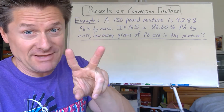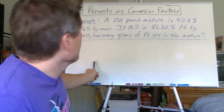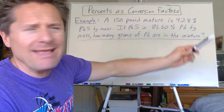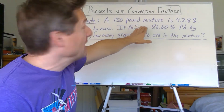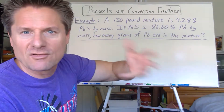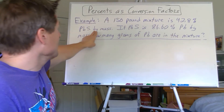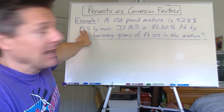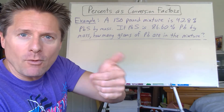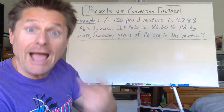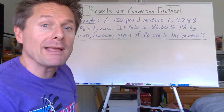Let's do an example problem — a double percent. If you need to think about it pictorially, you could do that. We've got a 150-pound mixture. It's 42.8% by mass lead(II) sulfide, PbS. And if that compound is 86.60% lead by mass, how many grams of lead are in the original mixture?